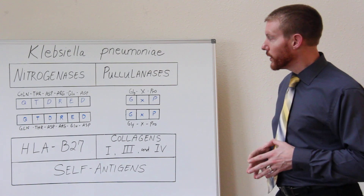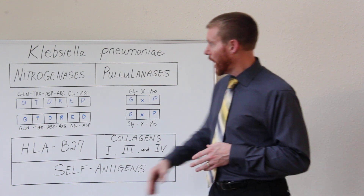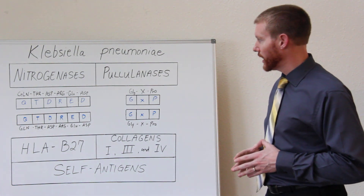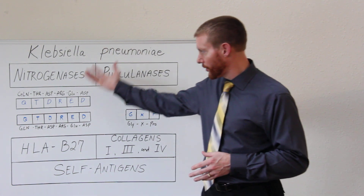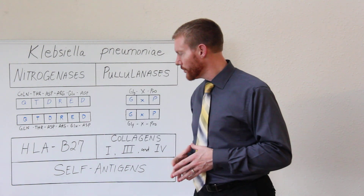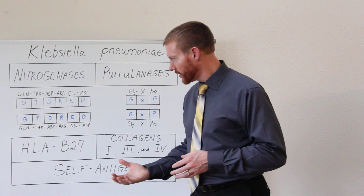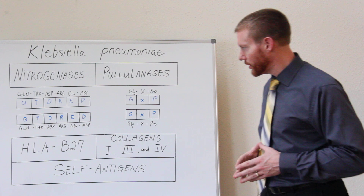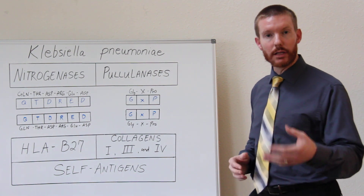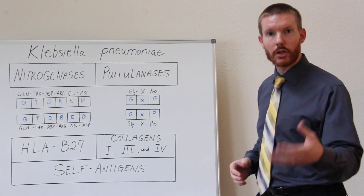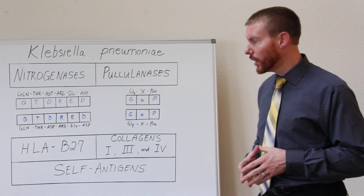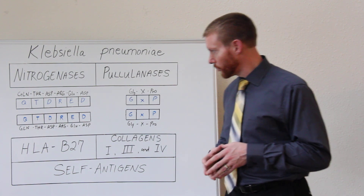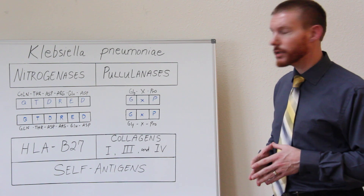So when the immune system identifies this protein produced by the bacteria Klebsiella in the gut, it will then go throughout the bloodstream and attack cells and tissues that contain HLA-B27. And again, this can be in the ligaments, tendons, joints, and discs of the spine — places where we feel the pain, stiffness, and reduced mobility associated with AS.